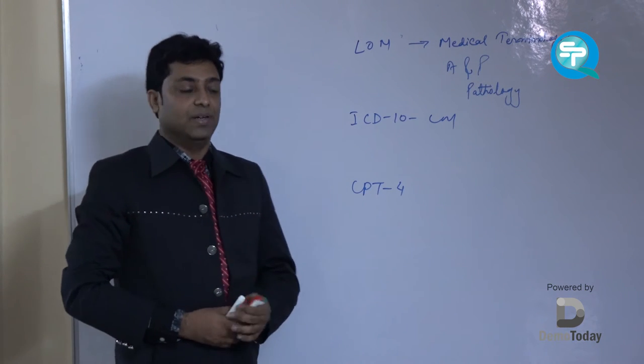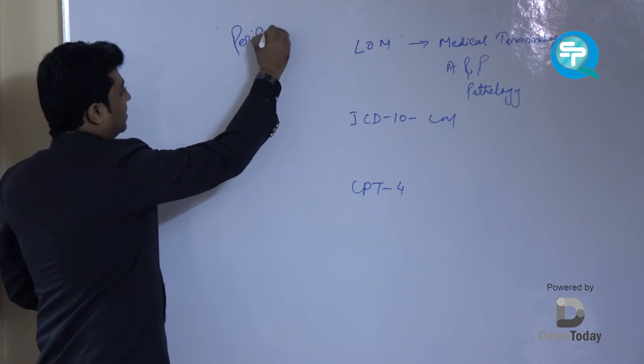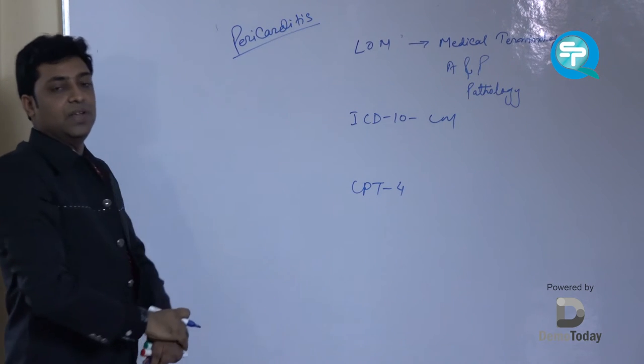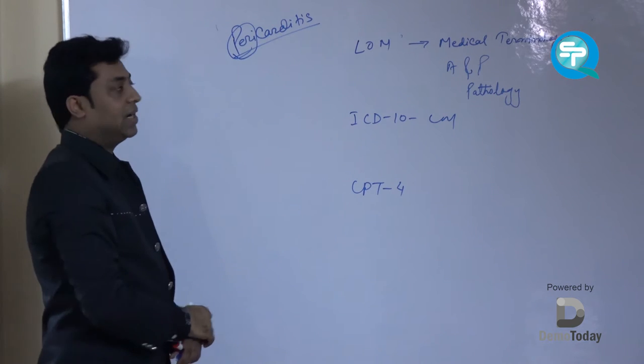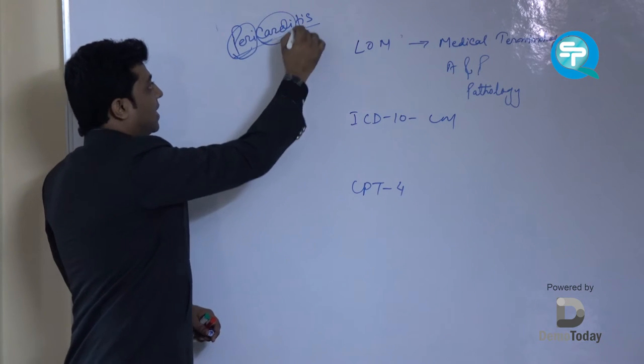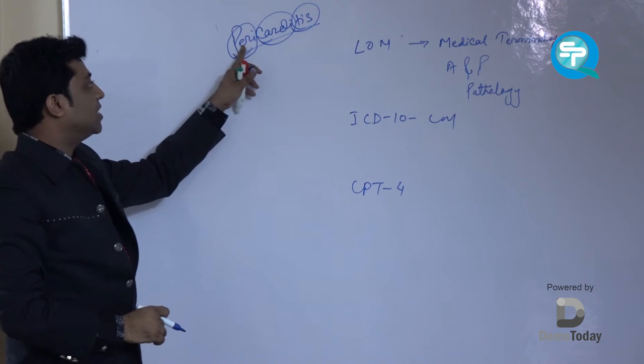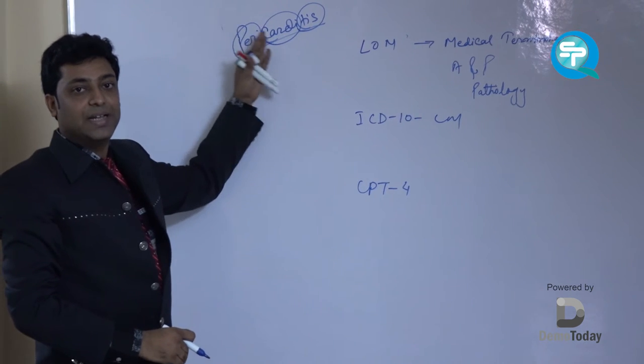Just take an example. We have one medical term that is known as pericarditis. That means inflammation of surrounding of heart. Peri means the surrounding outer covering of heart, cardio means heart, itis means inflammation. So inflammation of outermost layer of heart is known as pericarditis. That is called medical terminology.